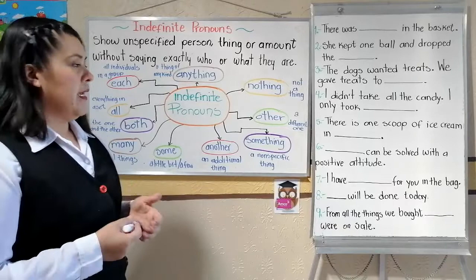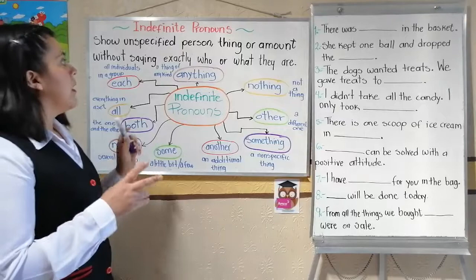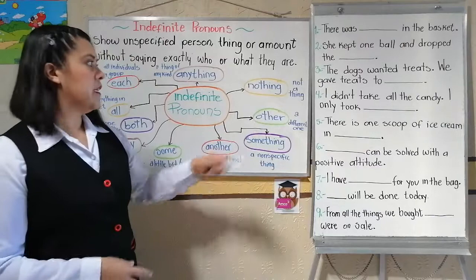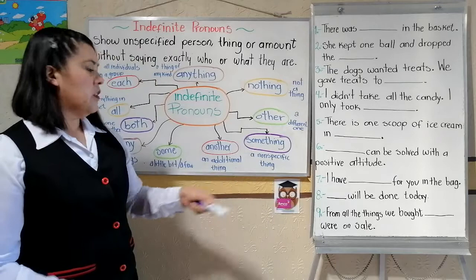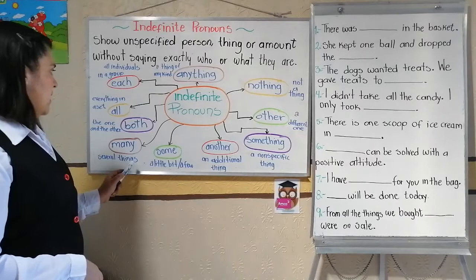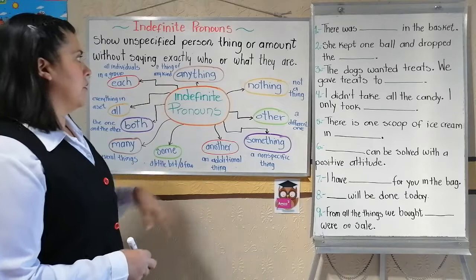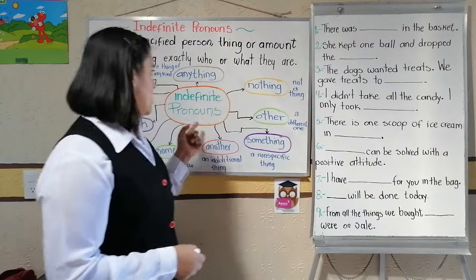Some examples of indefinite pronouns are: anything, which refers to a thing of any kind; nothing, meaning not a thing; other, meaning a different one; something, meaning another specific thing; another, meaning an additional thing; some, meaning a little bit or few; many, meaning several things; both, meaning the one and another; and each, meaning an individual in a group.